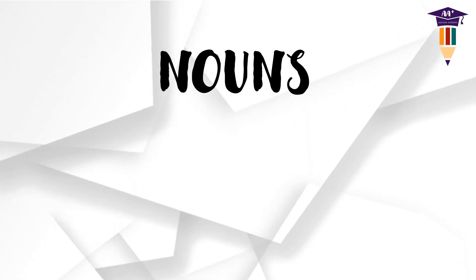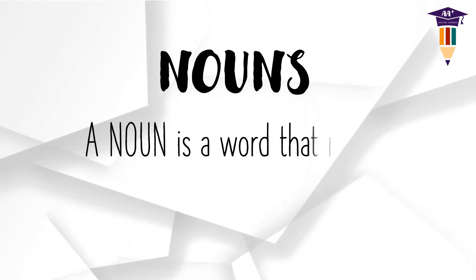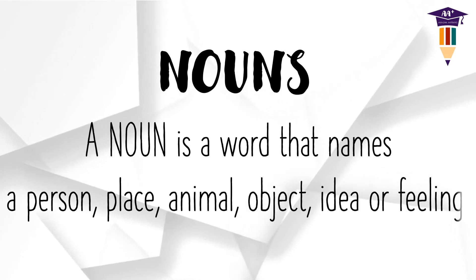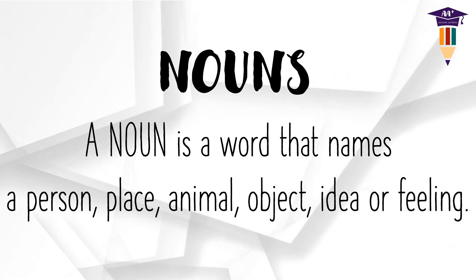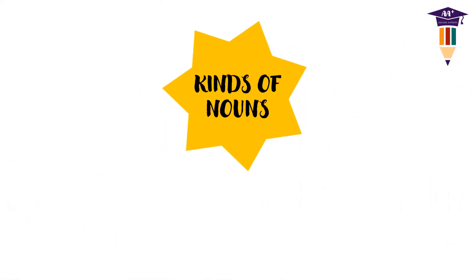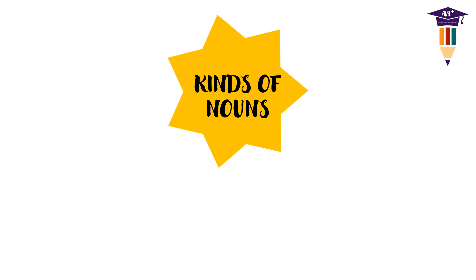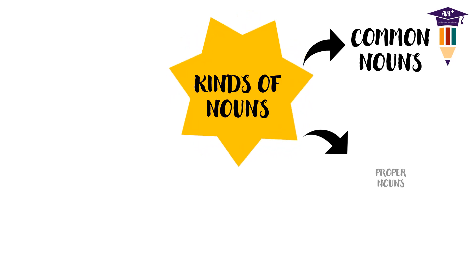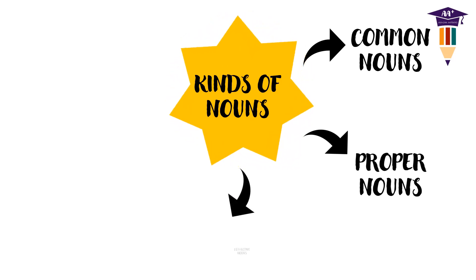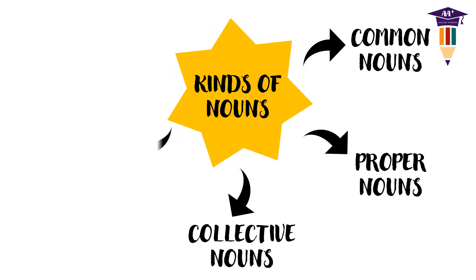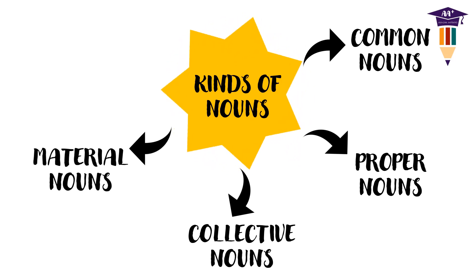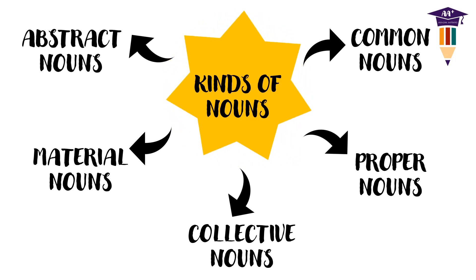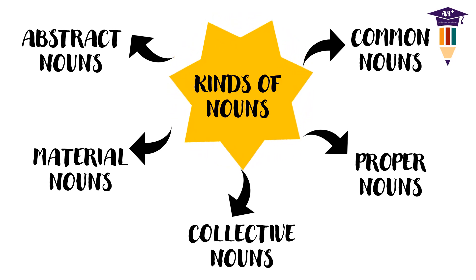Now without any further ado, let's get to today's topic. We shall begin by recalling the meaning of nouns. A noun is a word that names a person, place, animal, object, idea, or feeling. The five kinds of nouns are: first, common nouns; second, proper nouns; third, collective nouns; fourth, material nouns; and fifth, abstract nouns. We shall now have a look at each one in detail.